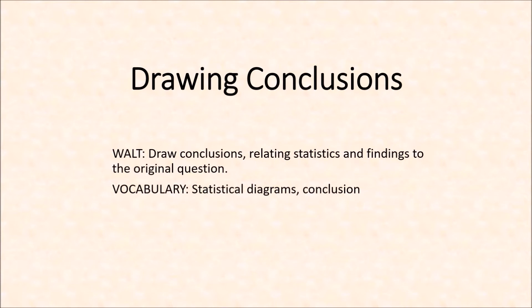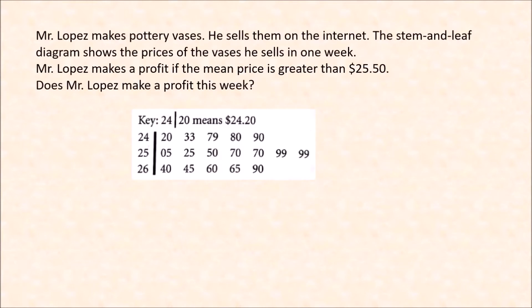We will use the words: statistical diagrams, conclusion. When we are making conclusions, we can use different statistics like mean, median, mode, range, or by looking at the general shape of the diagram to describe the distribution and compare different distributions or different data sets. Let's take this first example.